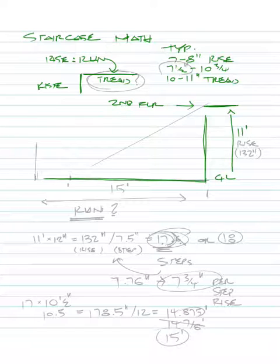So the first thing is we need to know, so this is our rise, right? The 11 foot rise. That's the overall rise. And the question here is, how long is the run? We don't know. But how many feet are we going to need for the run?